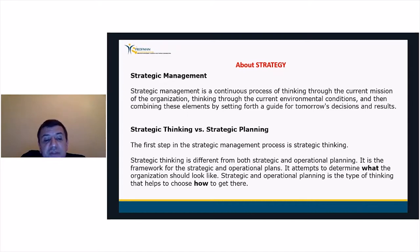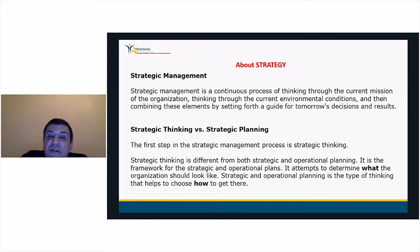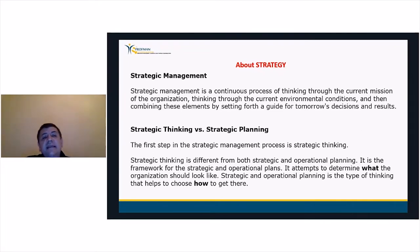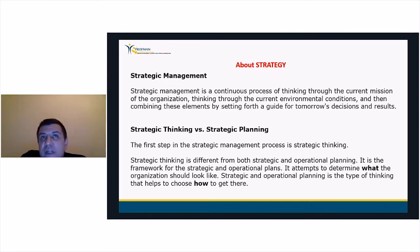Strategic management also deals with strategic planning — putting decisions into practice — as well as strategic control, which ensures the chosen strategy is being implemented properly and produces the desired results. Strategic thinking is different from both strategic and operational planning. It is the framework for the strategic operations plan and attempts to determine what the organization should look like.